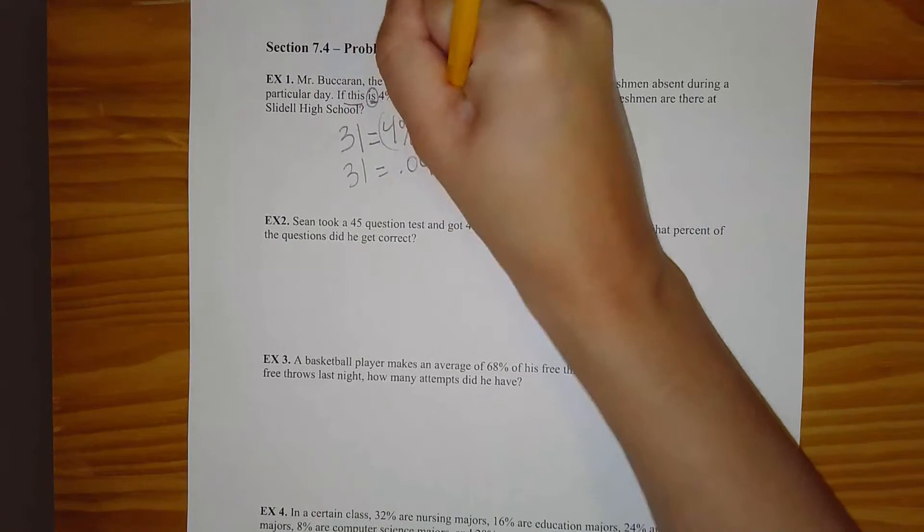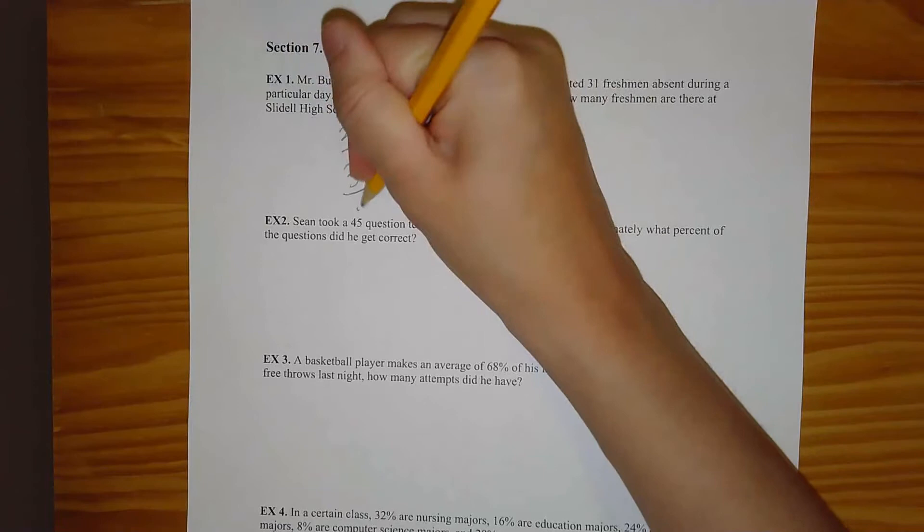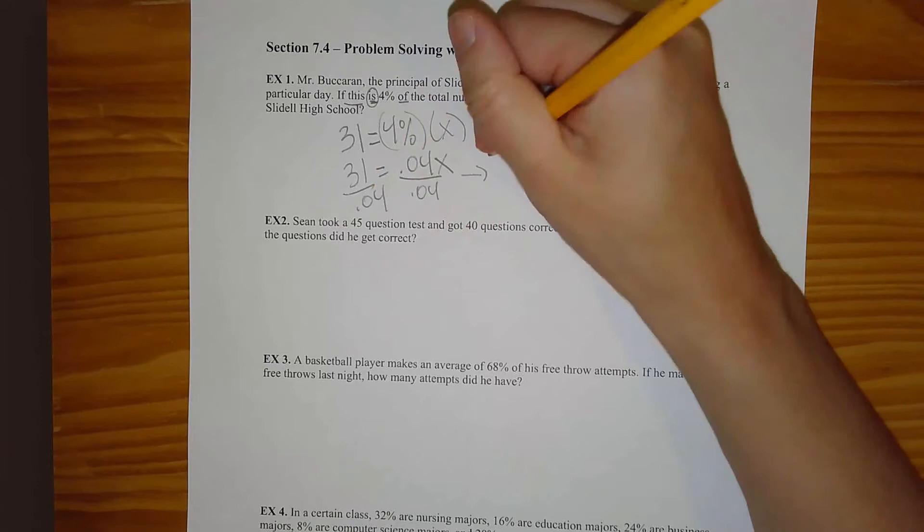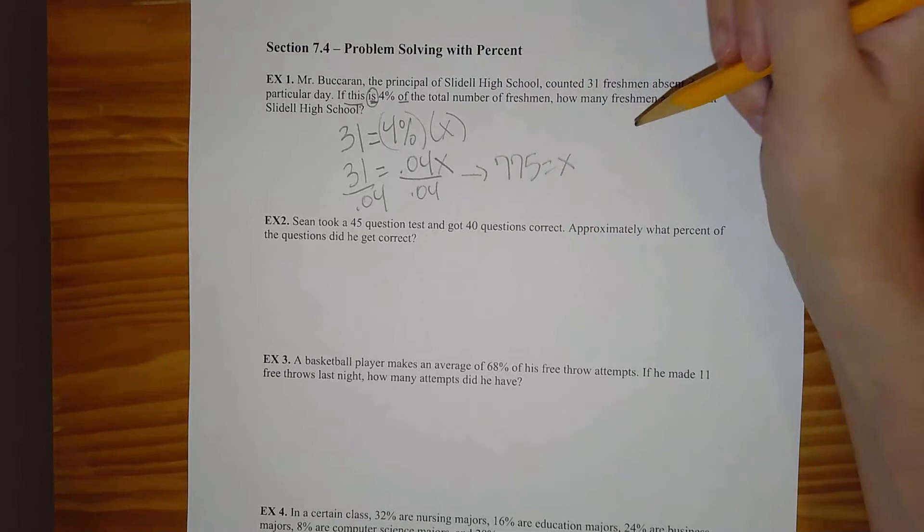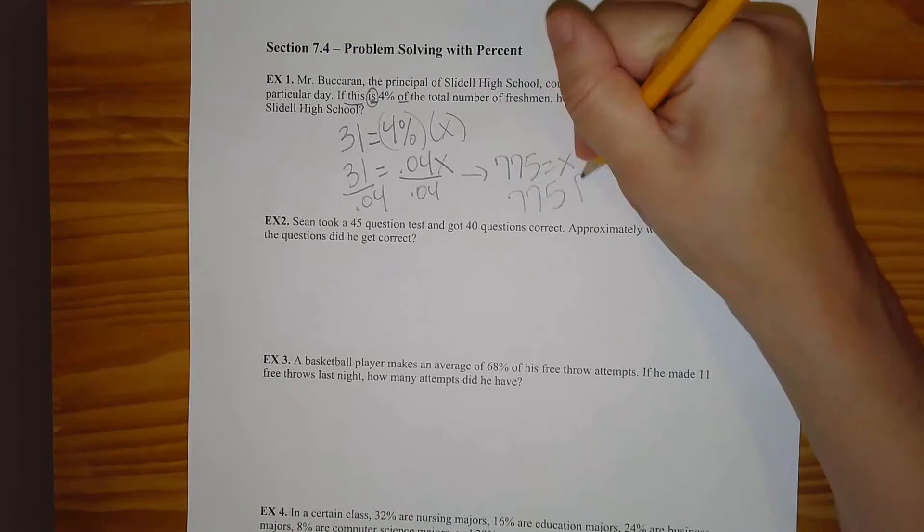To solve for X, I'll divide by 0.04 on both sides. 31 divided by 0.04 is 775, so 775 equals X. That means there are 775 freshmen at this high school.